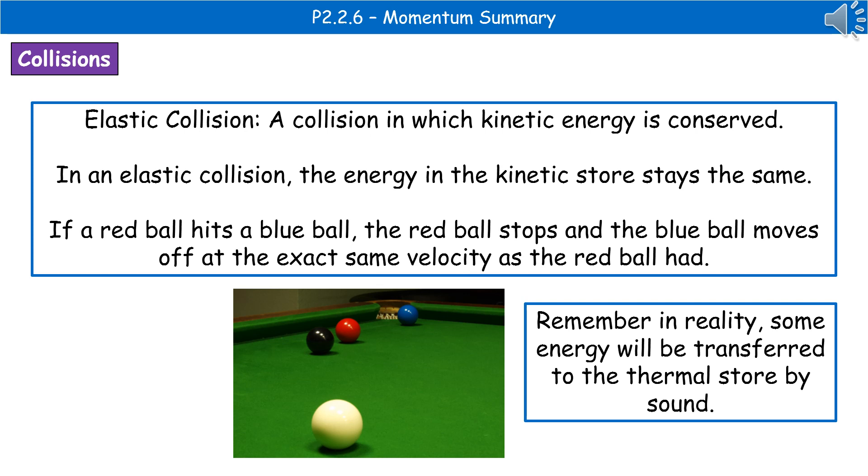So when we think about what happens when objects collide, we could have one of two types of collision. The first of these types of collision is an elastic collision. So this is where the kinetic energy is conserved. So the energy in our kinetic store stays the same, which means that if we used an example of our snooker balls, for example, if the red ball hits the blue one, then the red ball would stop and the blue ball would move off at the exact same velocity that the red ball had. In reality, this isn't really what happens because some of the energy will be transferred to the thermal store by sound.